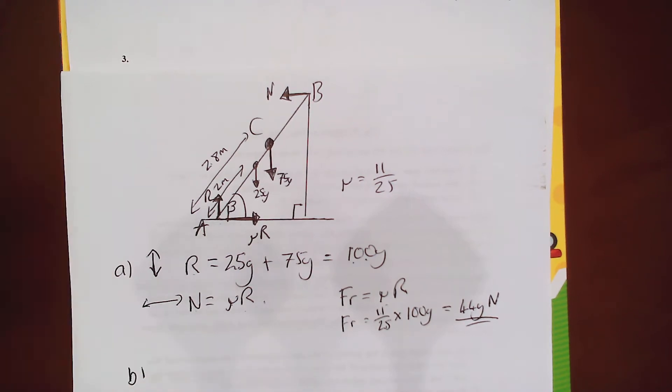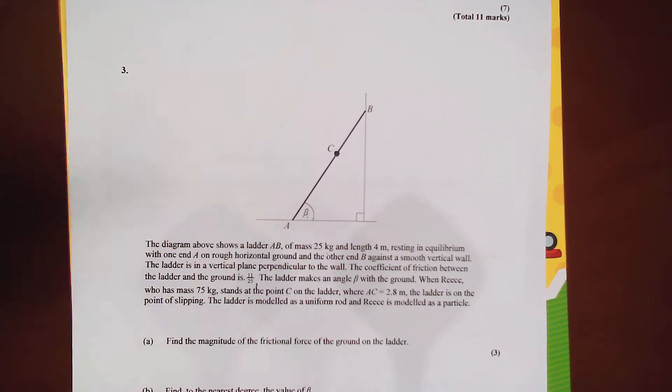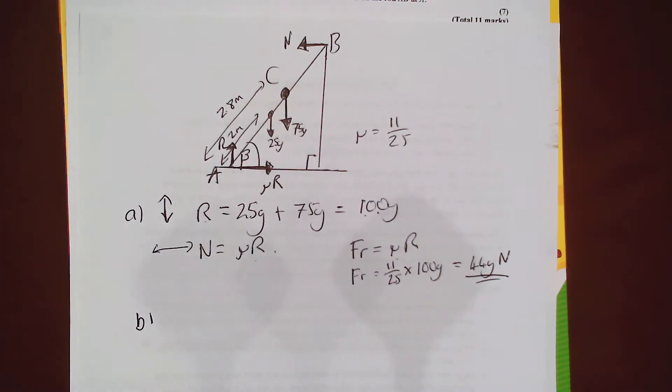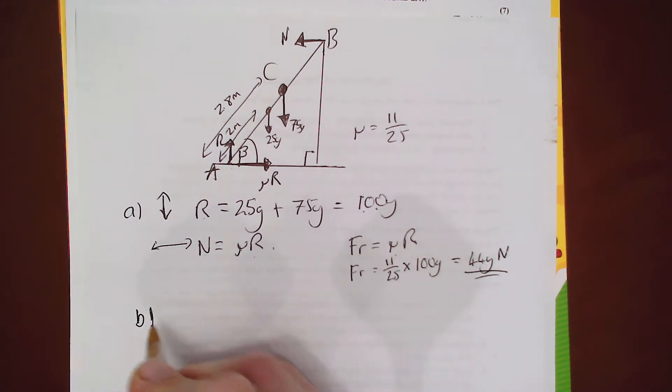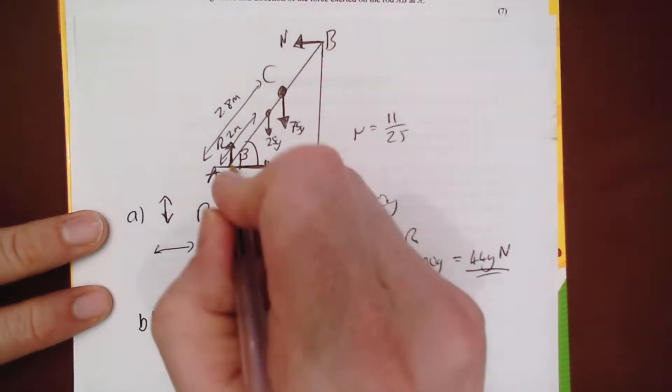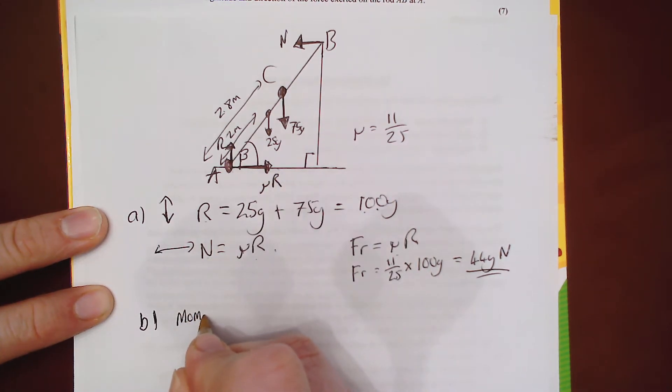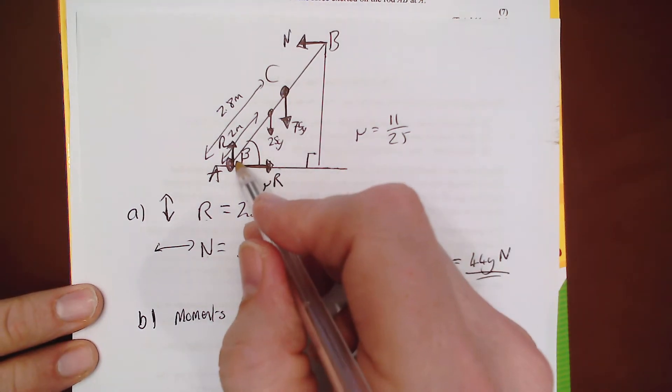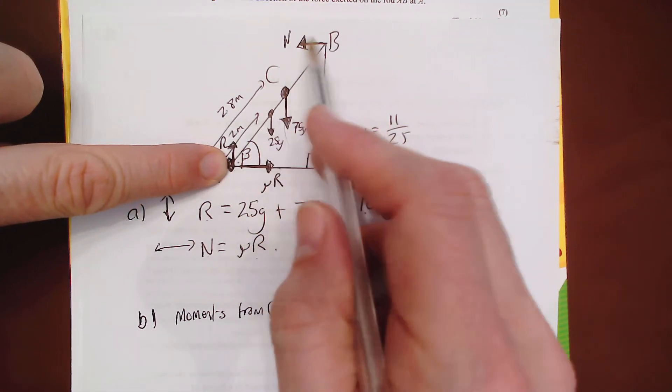So now B we're asked to find the angle beta. So we're going to find this angle beta. These problems you often are using forces like we've done but we also use moments. So I'm going to take moments and we're going to take moments from A on this occasion because that eliminates mu R and R. Now let's have a look what we've got. We've got these going clockwise and this would push it anticlockwise.